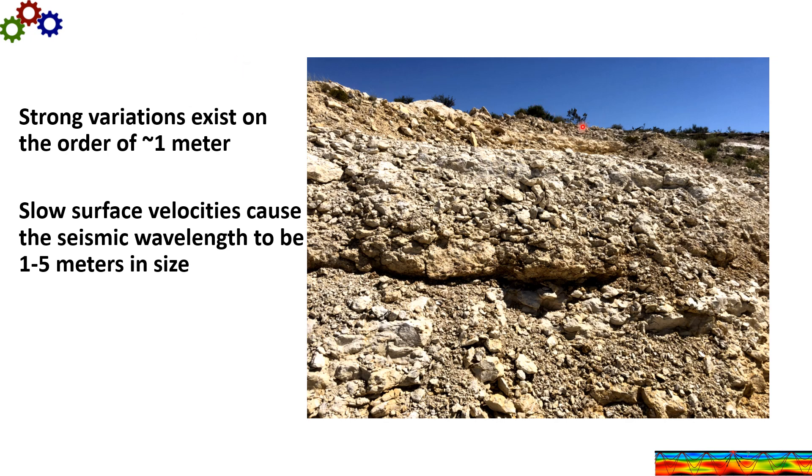Here's a road cut that shows small scale heterogeneities. You see there are trees here, so we're looking at a depth of maybe 10 to 20 meters. Now these type of heterogeneities exist in karsted areas and in foothill areas. And these blocks are of size about 1 meter. Now these slow surface velocity cause the seismic wavelength to be about 1 to 5 meters in size. So these small scale heterogeneities have a big effect. And this will cause a lot of scattering.